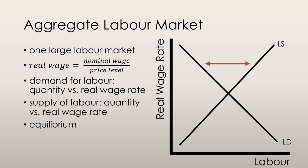If we have a real wage rate that's above the equilibrium position, then we have a greater quantity supplied than quantity demanded of labor, and so the wage rate gets bid down — there's downward pressure until we reach equilibrium. Conversely, if the real wage rate is lower, the wage rate simply gets bid up because firms want to hire more people, and that keeps happening until equilibrium is reached.